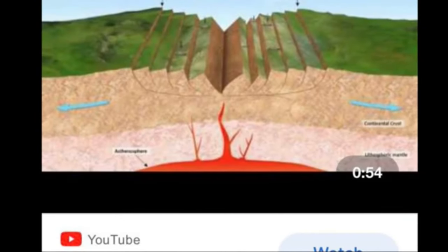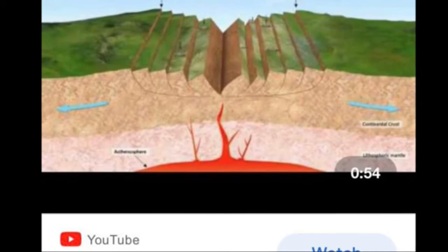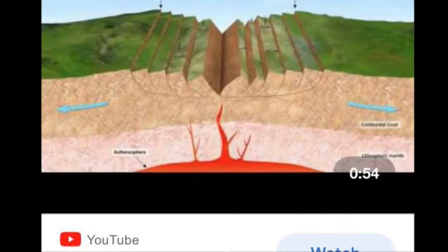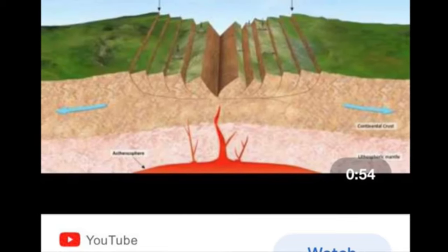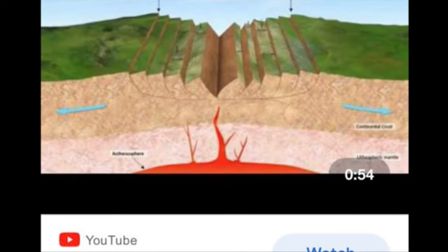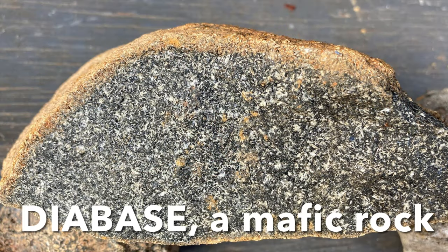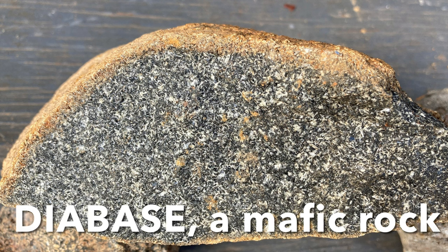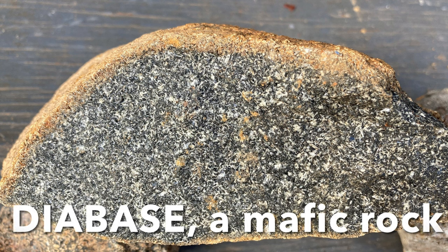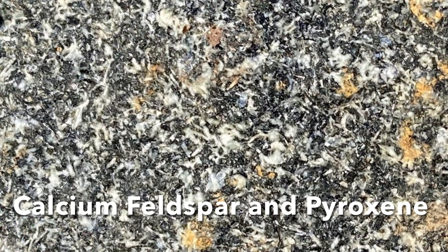When you have a supercontinent like Pangaea that covers a huge portion of the earth, it's like having a lid on a very hot pot — it makes it even hotter. The mantle gets so hot that eventually it erupts, splitting the supercontinent into pieces. This is our first igneous rock example. This is called Diabase. It is an igneous rock, an intrusive rock, which means it comes up close to the surface but does not erupt. It is also a mafic rock, which means it is very high in iron, magnesium, and calcium.